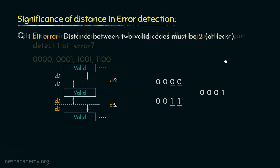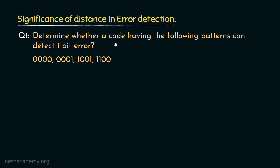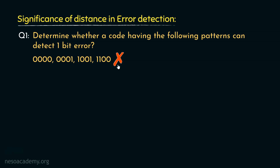Let's now solve some example problems. Determine whether a code having the following patterns can detect 1-bit error. For 1-bit error detection, the valid codes should be at least distance 2 apart. Observing these codes, these two are unit distant — this code can be converted into the other if we just toggle the LSB. Similarly, another pair is also unit distant because one can be converted into the other by toggling the MSB. Since not all codes are of distance 2 from each other, using these patterns we can't really detect 1-bit errors.